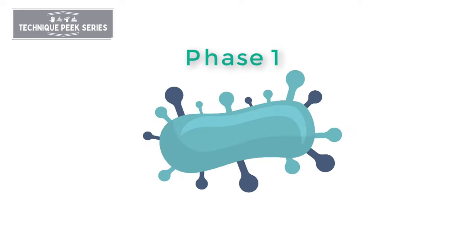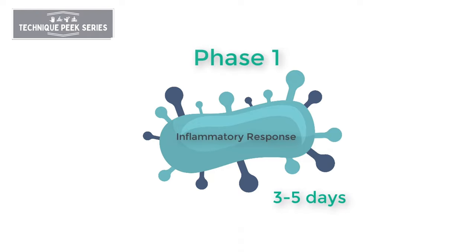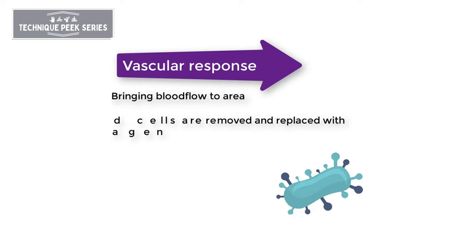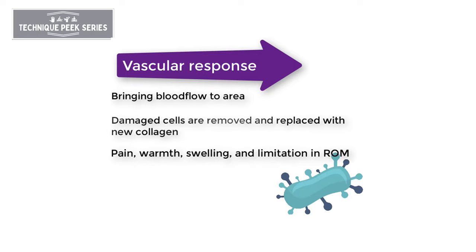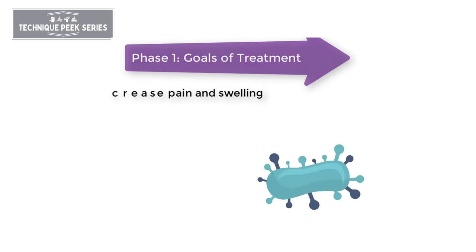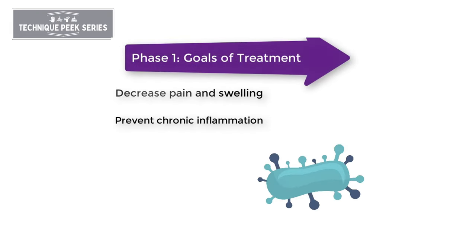Phase 1 is the inflammatory response. This phase lasts 3–5 days. During this time, the body is going through a vascular response in which it is bringing blood flow to the affected area. This increase in blood flow removes damaged cells and replaces them with new collagen. Pain, warmth, swelling, and limited range of motion are usually present during this phase.